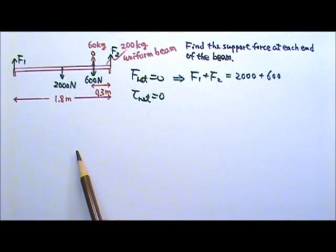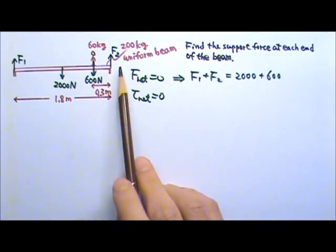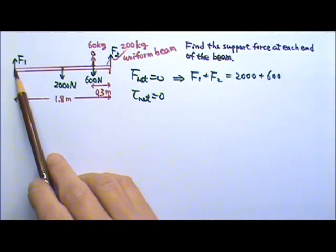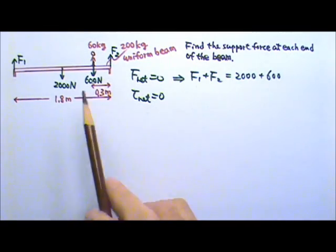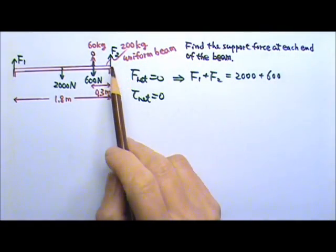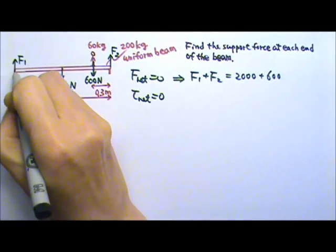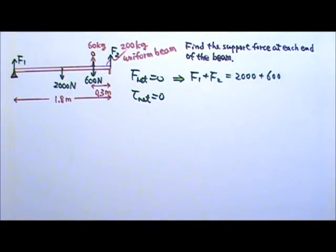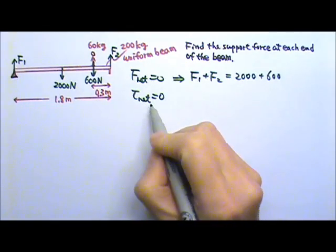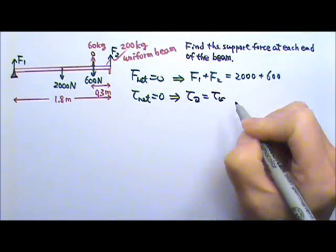An ideal location for a pretend axis is usually where we have the most unknown forces. In this problem we have two unknown forces, F1 and F2, so we can choose the axis at either location — both will be just as convenient. I'm going to choose F1 right now. So with F1 as the axle, the net torque has to be zero, meaning the clockwise torque has to equal the counterclockwise torque.